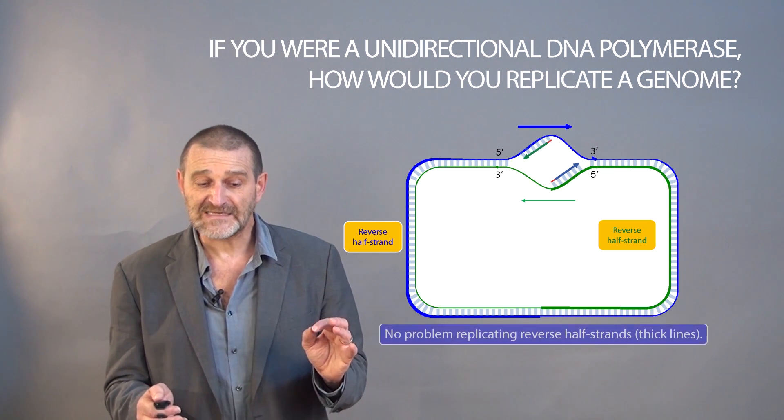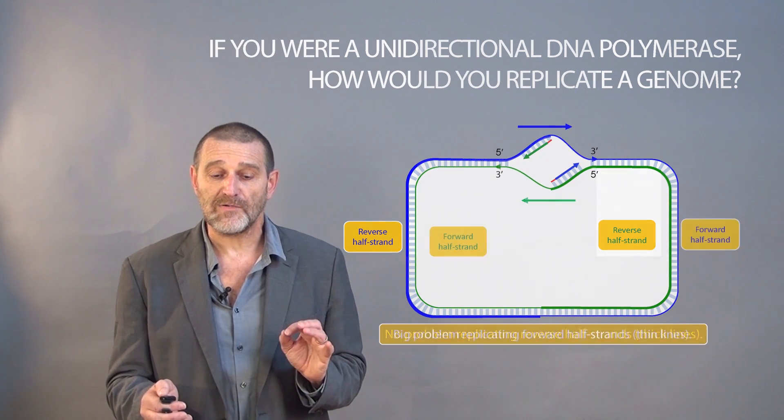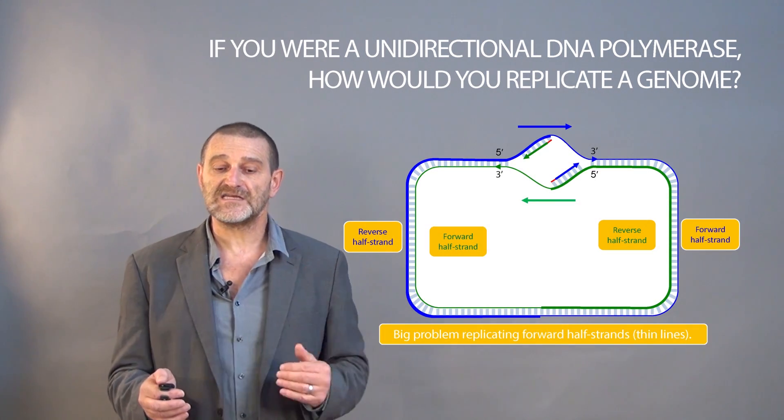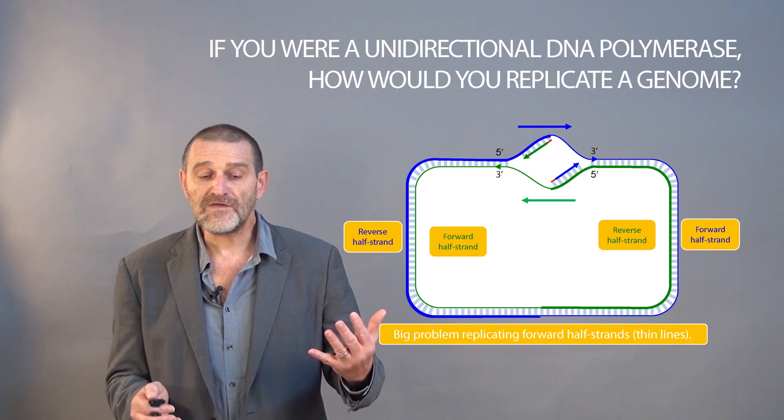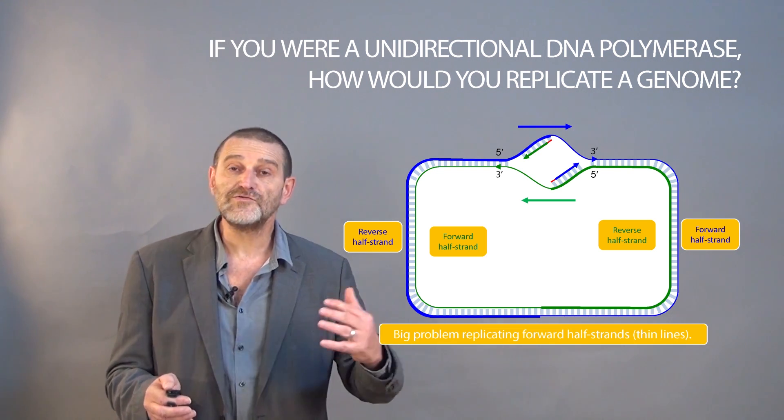But two other half strands present a big problem because they cannot move in the same direction that they go. So if you were a unidirectional DNA polymerase, how would you replicate a genome?